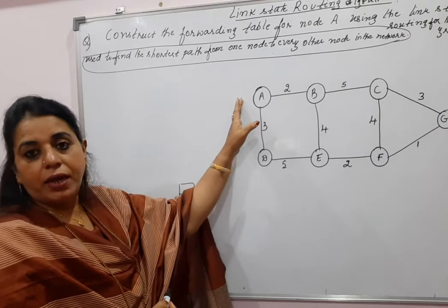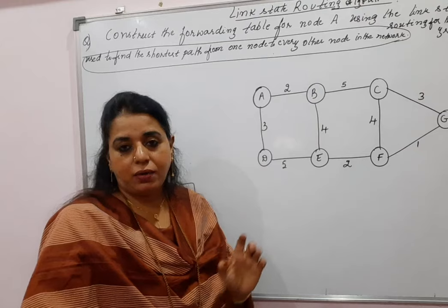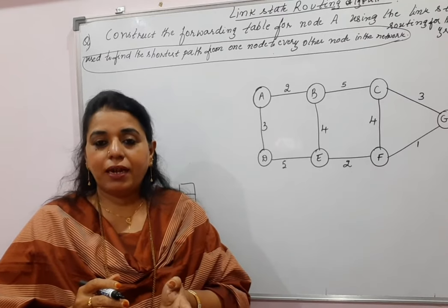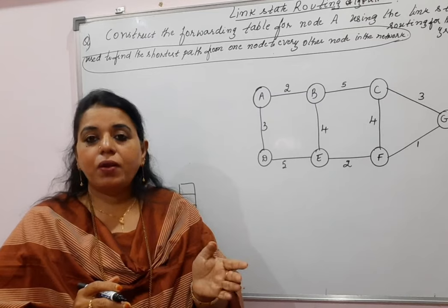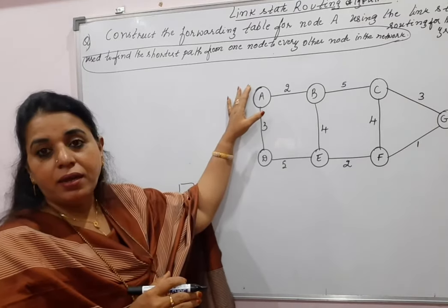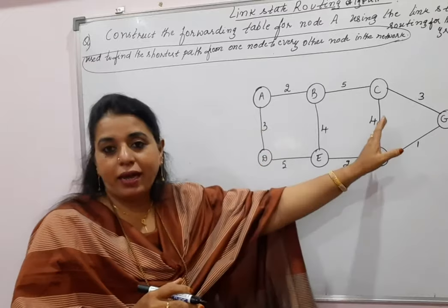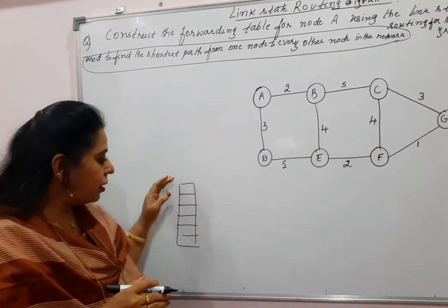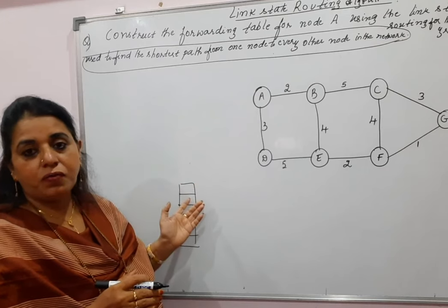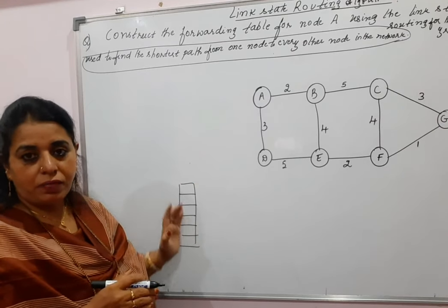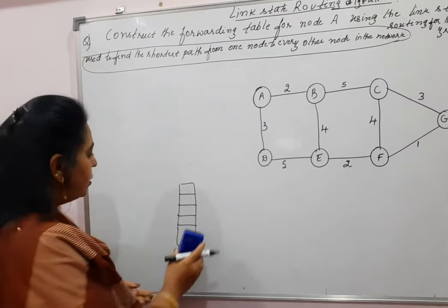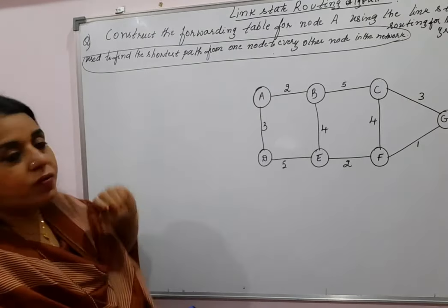In distance vector routing, the node shares complete information about all other nodes in the network to its neighbors. But in link state routing, it shares information only about its neighbors to all other nodes. Simply put: in distance vector routing, every node tells about the entire internet to its neighbors, whereas in link state routing, every node tells about its neighbors to the entire internet. In distance vector, every node maintains a distance vector; here, every node maintains only information about its neighbors.